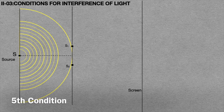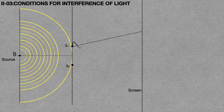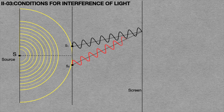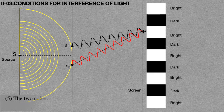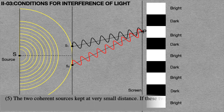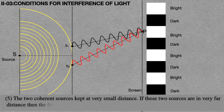The fifth condition is shown in this animation. If the light waves from sources S1 and S2 form an interference pattern at point P, then the two sources must be kept at a very small distance. If these two sources are at a very far distance, then the fringe width becomes very small and, as a result, these fringes cannot appear.